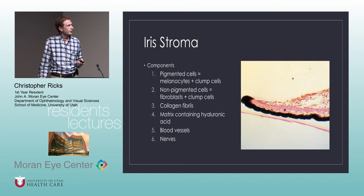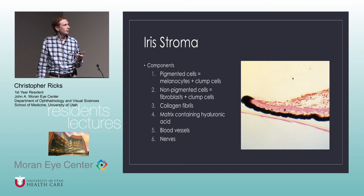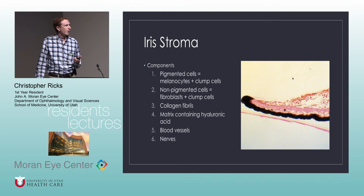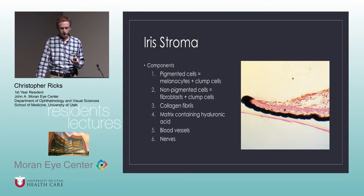The stroma itself contains pigmented cells, melanocytes, clump cells, fibroblasts, collagen, hyaluronic acid, blood vessels, and nerves.